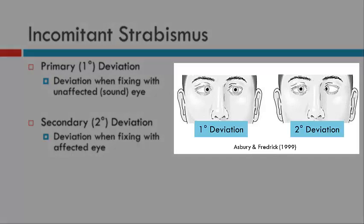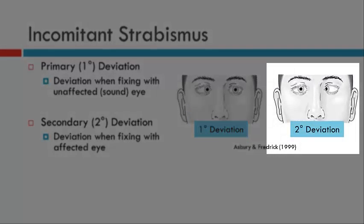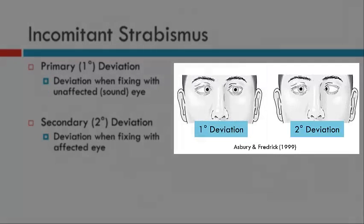Looking at the image, we have a patient with a right affected eye fixing with the left eye. The deviation here is much smaller than the deviation when the patient is made to fix with the right eye, the affected eye. This illustrates why there is an increase in the size of the deviation when the patient fixes with the affected eye.